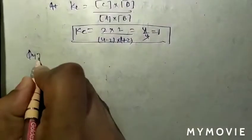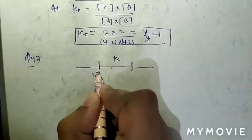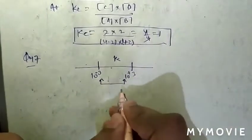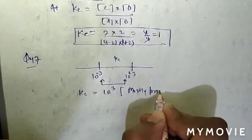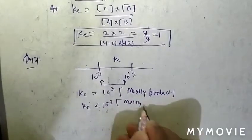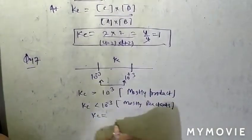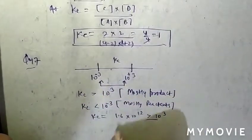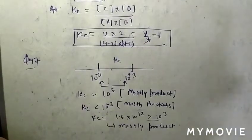Question number 47: the range for the equilibrium constant — when Kc is between 10⁻³ and 10³, the system is in equilibrium. When Kc is greater than 10³, mostly products are formed. When Kc is less than 10⁻³, mostly reactants dominate. Here Kc = 1.6 × 10¹², which is far greater than 10³, so mostly products are formed. Question 47, option C is correct.